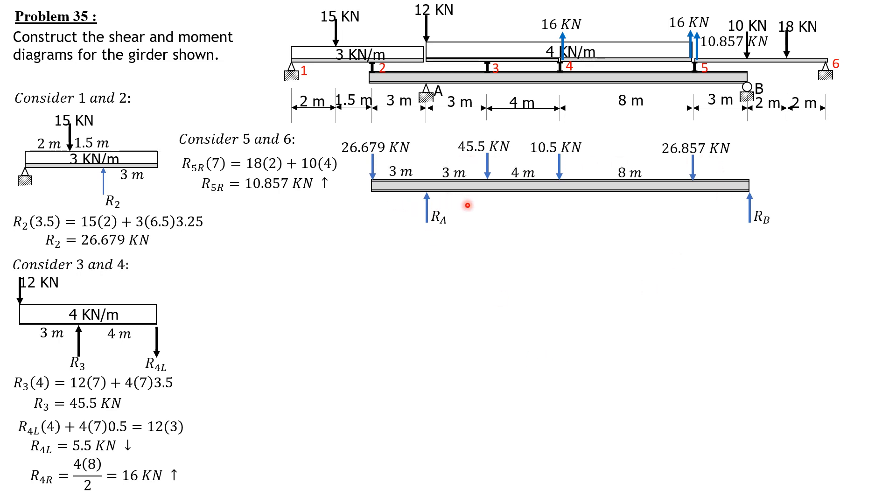That's 3 meters, 3, 4, 8, 3. Summation of moments about B equals zero. RA times 18 equals 26.853 times 3 plus 10.5 times 11 plus 45.5 times 15 plus 26.679 times 21. Solving for RA, RA is 79.935 kilonewtons.